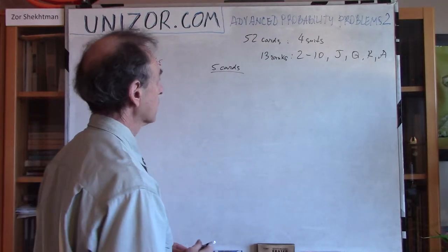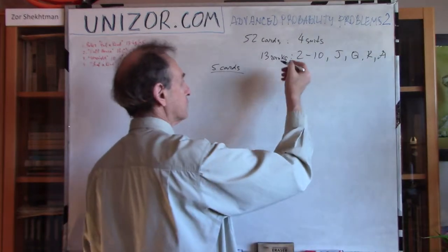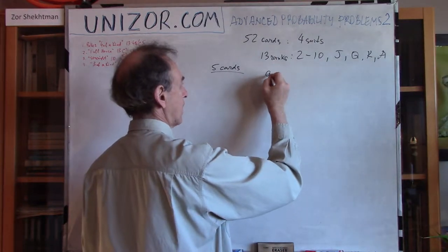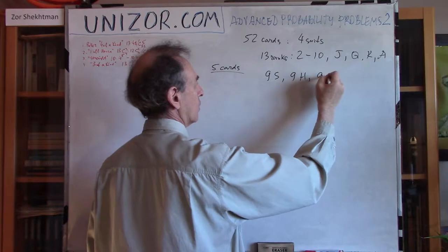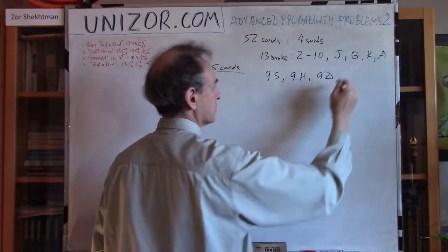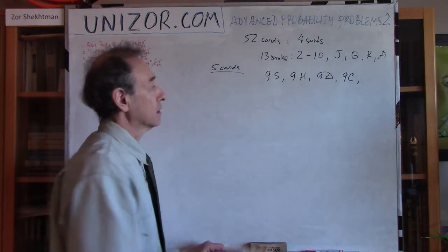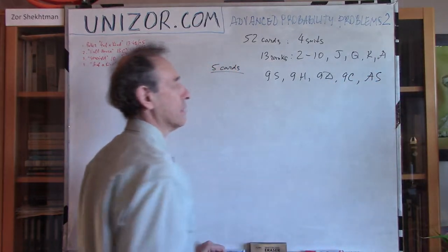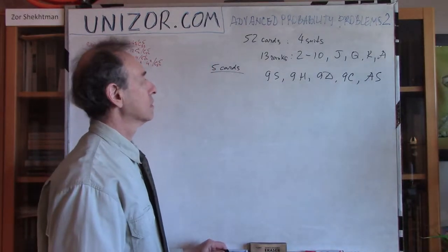The combination number one is four of a kind. What is four of a kind? If you have five cards, four of a kind means you have four different cards of the same rank. For example, you have nine of spades, nine of hearts, nine of diamonds, and nine of clubs. The fifth card can be anything — any other card, let's say ace of spades. This is the example of a combination called four of a kind.